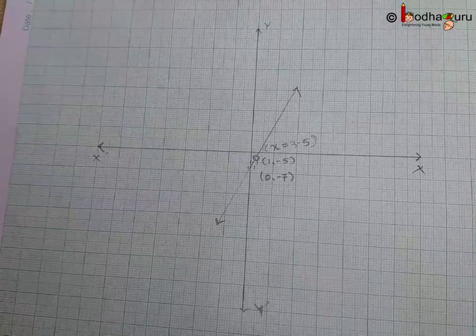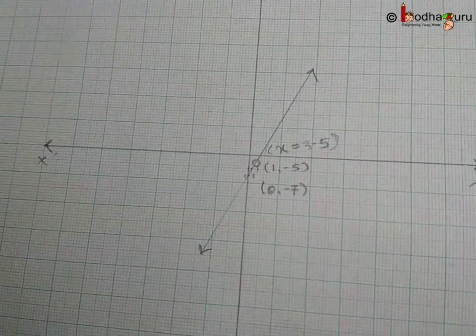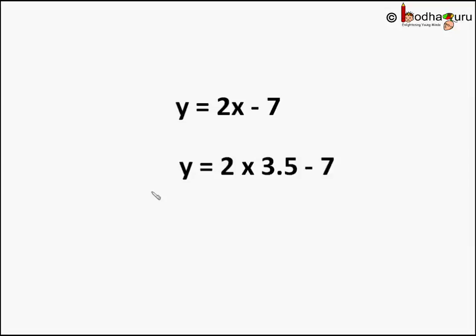So we can see it intersects the x-axis at only one point, that is x equals 3.5. So if we put that value in the equation, we get y = 2 × 3.5 - 7, and 2 × 3.5 is 7, so it becomes 7 - 7, which equals 0.